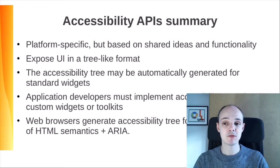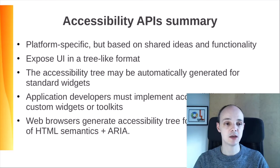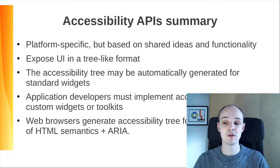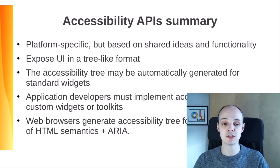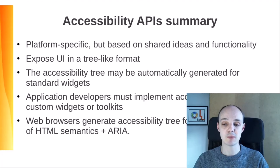Before we move on, let's make a recap about accessibility APIs and the accessibility tree. These APIs are platform-specific but based on shared ideas and functionality. They expose the UI of applications in a tree-like format which ATs will consume. This tree may be automatically generated for standard widgets with no specific coding. But in the case of more complex software, app developers must implement accessibility APIs for custom widgets or toolkits. Web browsers are an example of this more complex software. In addition to their own UI, they must generate the accessibility tree for web contents, using HTML hierarchy and semantics with the ARIA standard for advanced features.